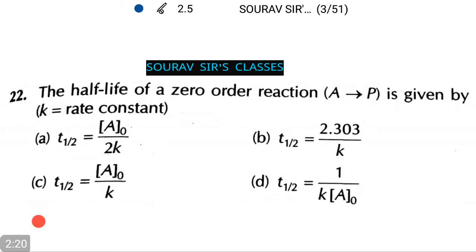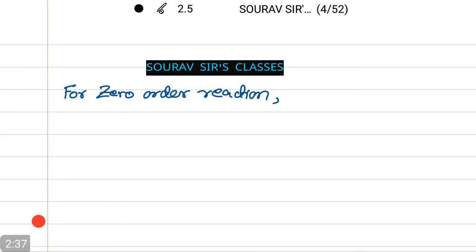Now, in the next question we see that the half life of a 0 order reaction A tends to P is given by K equals to rate constant. We have to calculate and find out which of our options are correct.